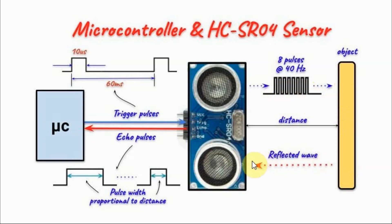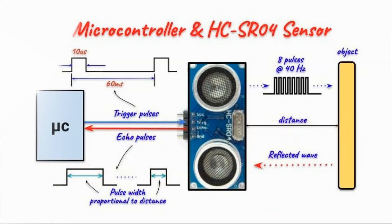The reflected waveform is then picked up by the sensor, and the sensor will generate the echo pulse. The width of the echo pulse is proportional to the distance between the sensor and the object. The timer inside the microcontroller can be used to measure the echo pulse width and calculate the distance between the object and the sensor.